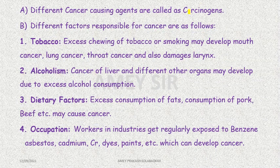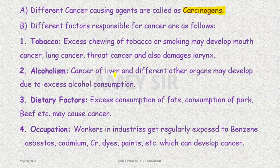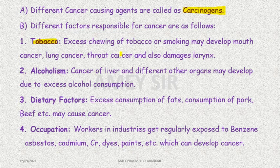Agents that cause cancer are called carcinogens. Textbooks categorize them differently — chemical agents, radiation, viruses, oncogenes. One type is tobacco: excess chewing of tobacco or smoking causes mouth cancer, lung cancer, throat cancer, and damages the larynx.